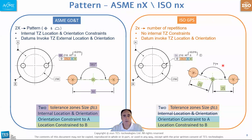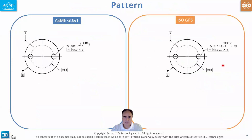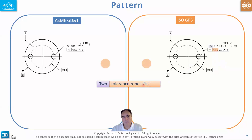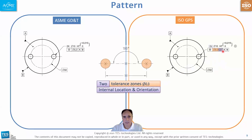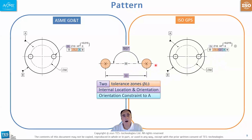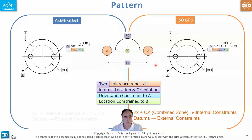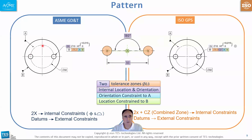Now if we want the internal constraints to apply as well in ISO GPS, there is a way. Left is GD&T, right is GPS — let's start with GPS. Two times means we have two tolerance zones, 0.3 in size, but note we added CZ — combined zone — which means internal location and orientation constraints between the two 0.3 tolerance zones apply. Now datum A adds only orientation constraints of the group to datum A, and B — A and B — locates and orients the pattern. In this case, the two standards give us the same result with internal relations invoked.